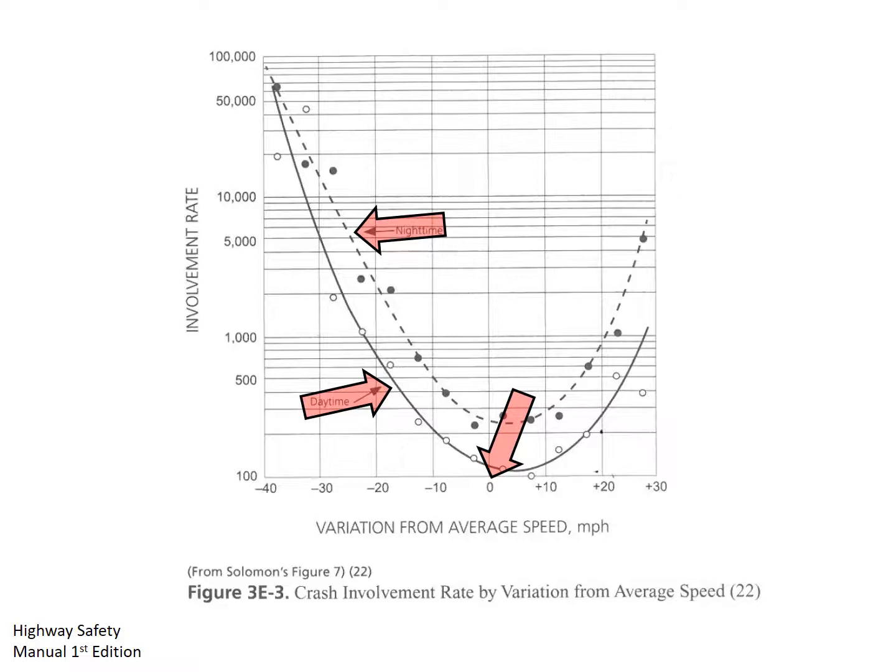As a vehicle's speed deviates from the average, the crash rate increases. As the speeds grow in their difference from the average, the crash rate continues to increase. This is the same for speeds that are lower and higher than the average, and each direction has roughly similar shapes.